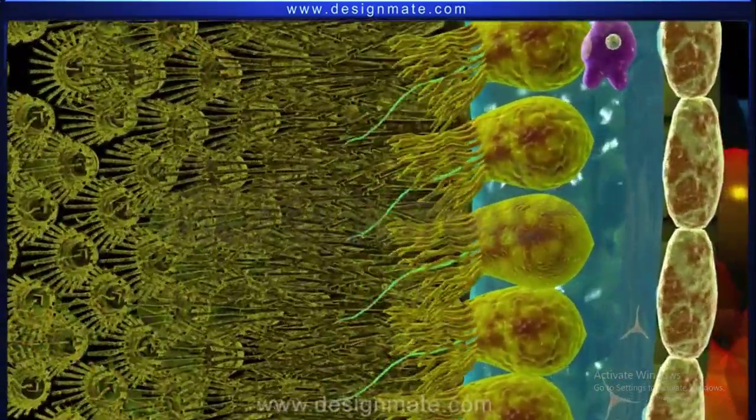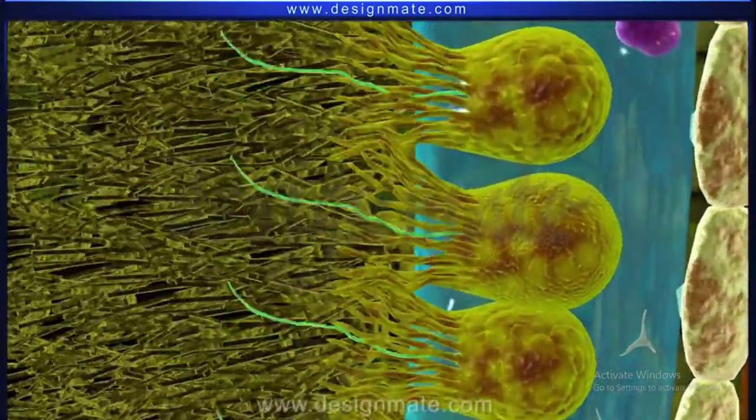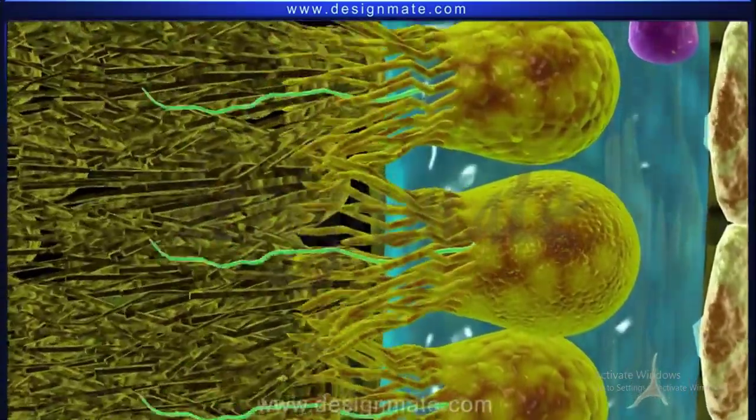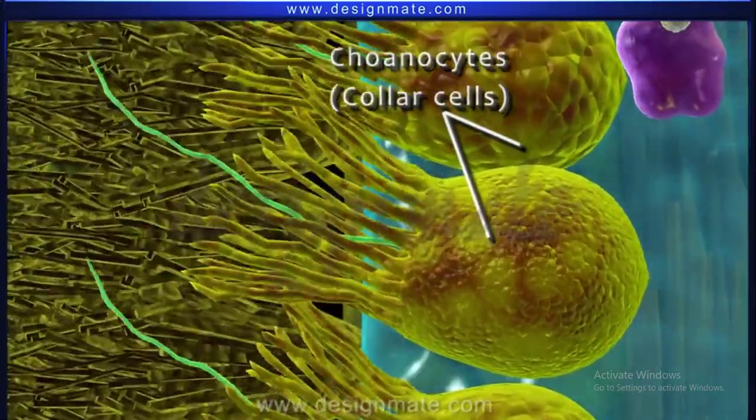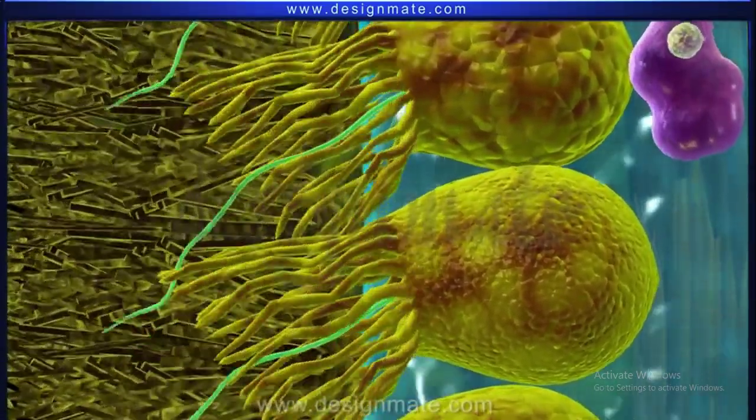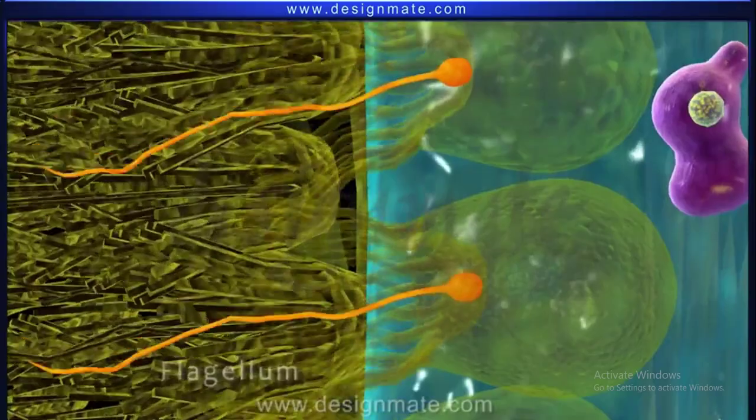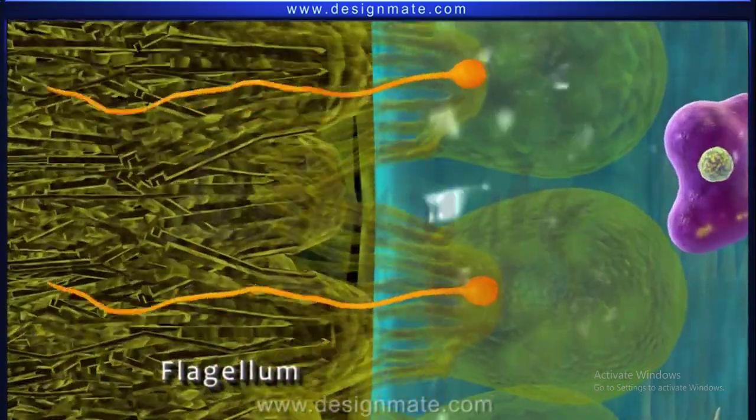The interior of the Spongocoel is lined with flagellated cells called Choanocytes or Collar cells. Choanocytes have a tubular collar and a flagellum extends from the center.